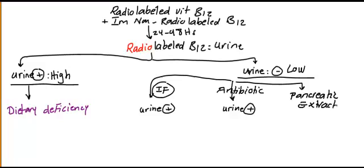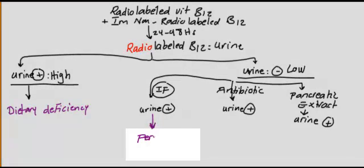Urine also becomes positive, meaning high radio-labeled B12 in urine. So now what are the causes for all of these? If you give him intrinsic factor, what is the disease which is corrected by intrinsic factor? We call this disease pernicious anemia.